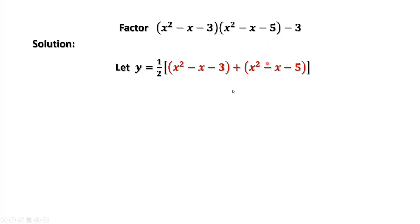To simplify the right-hand side, we have y equals x squared minus x minus 4. This is the new variable we need to use to simplify the first part.